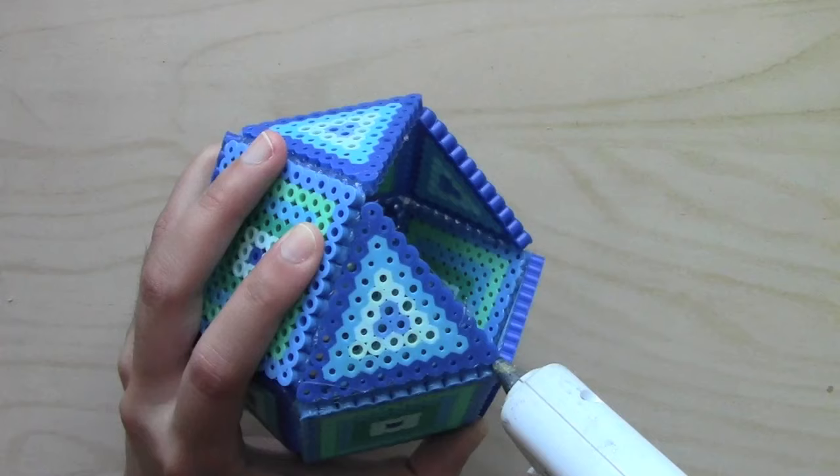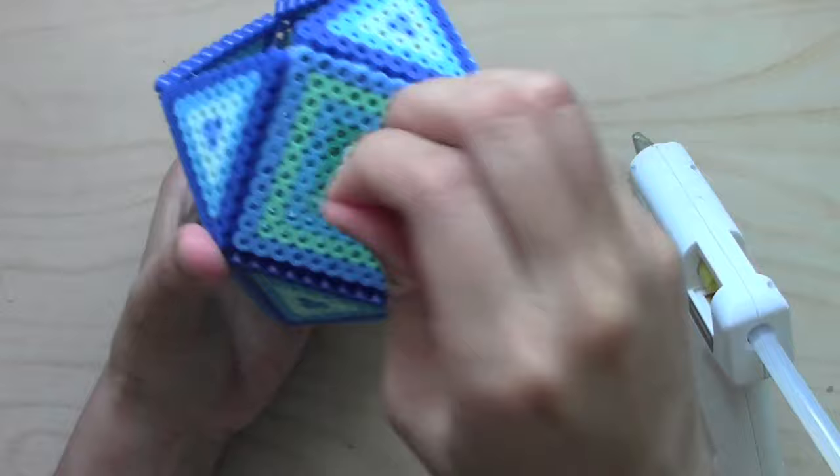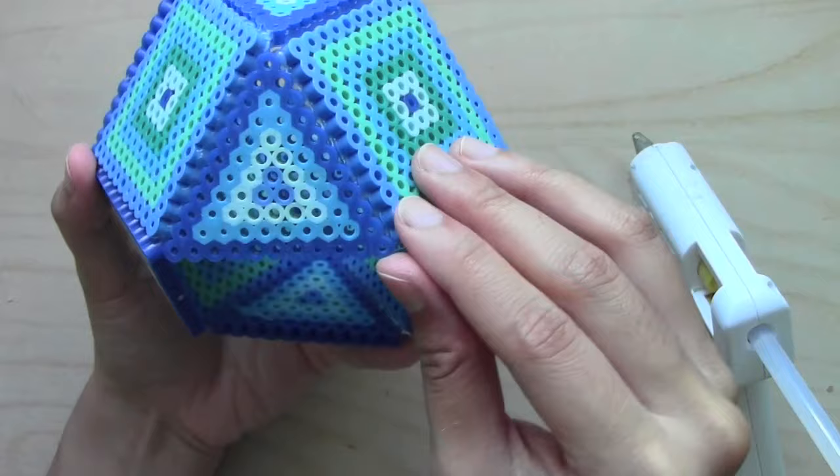Once you clean it up and make sure that all the sides are connected together properly, then you're pretty much done. That's it! That is your geometric plant holder.